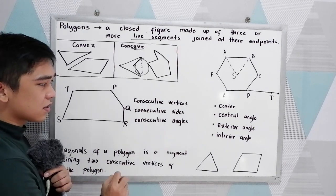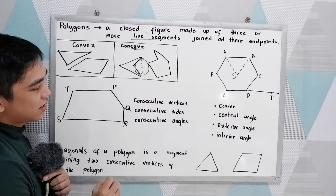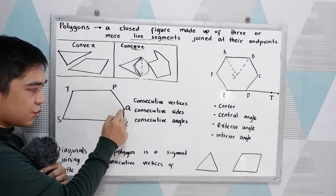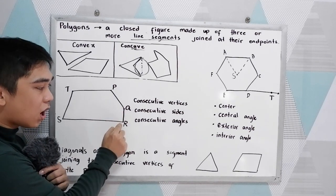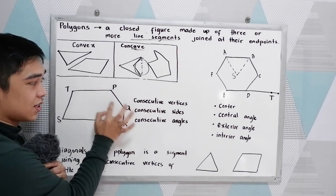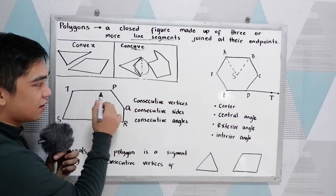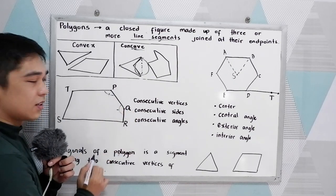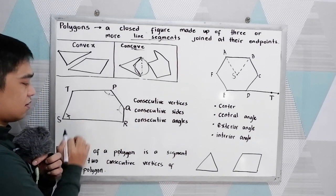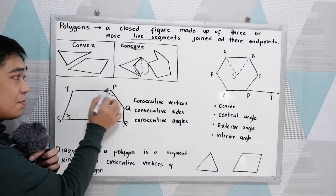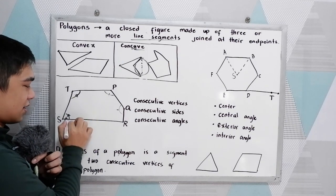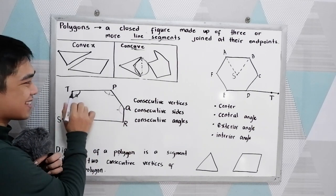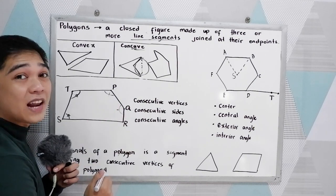Consecutive angles are angles in a polygon that are next to each other. For example, angle TPQ and angle PQR are consecutive angles. Similarly, angle RST and angle STP are consecutive angles. However, angle PQR and angle STP are not consecutive angles.